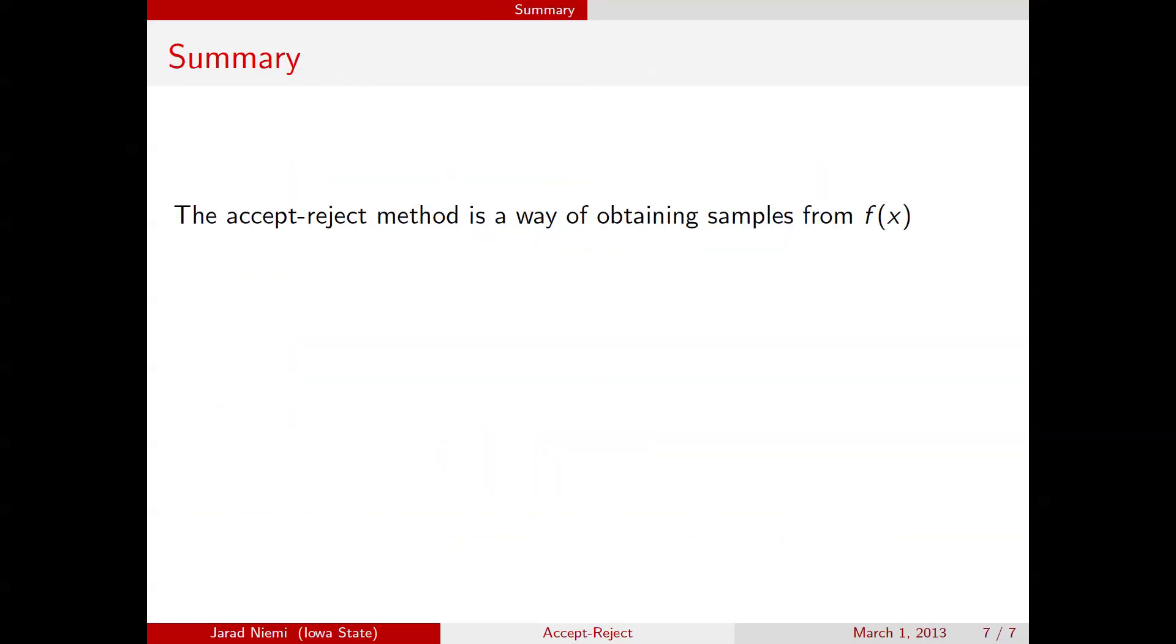So in summary, this accept-reject method is a way of obtaining samples from a density f when, for example, the inverse CDF cannot be computed, or at least that it's very expensive to compute. And you at least can evaluate the density up to a normalizing constant.